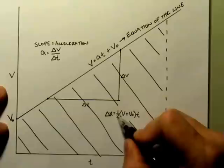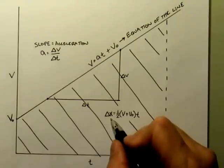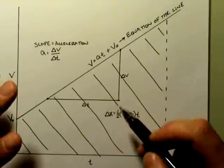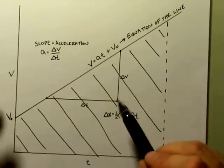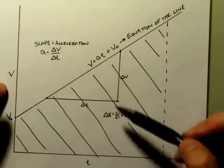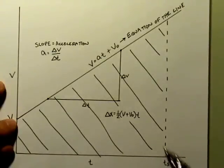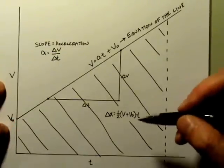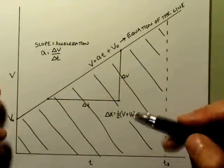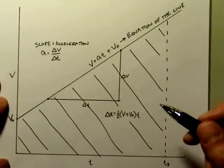This is really important: I cannot see the actual displacement from this graph — I can't tell my position. What I can tell is how much the position changed. To know where I am, I would need to know the initial position, and that cannot be shown on this graph. You can show velocities and time, find how much position changed, and figure out the acceleration, but you can never determine where the motion actually started from just by looking at this graph.